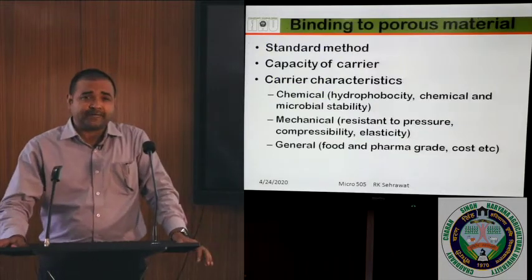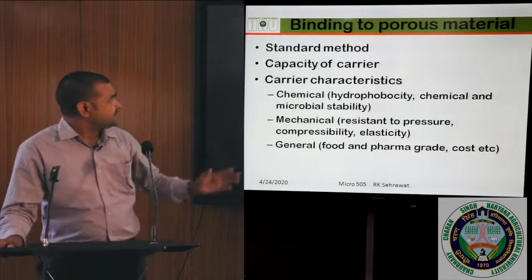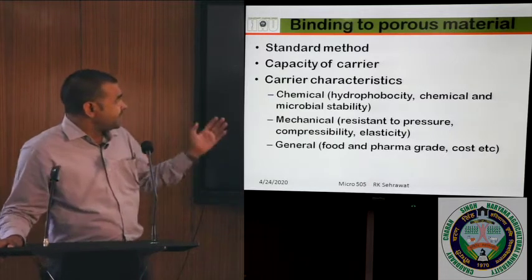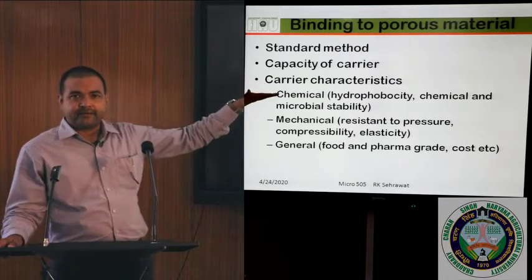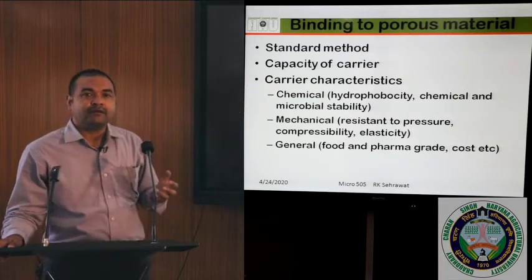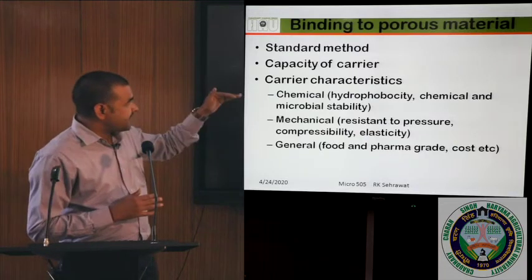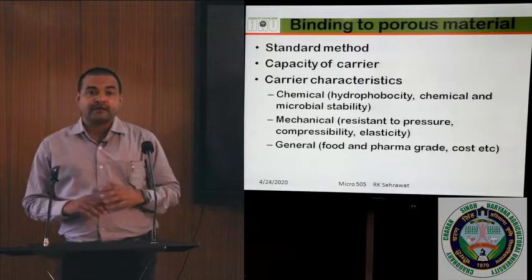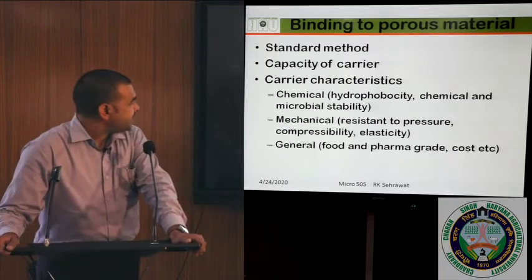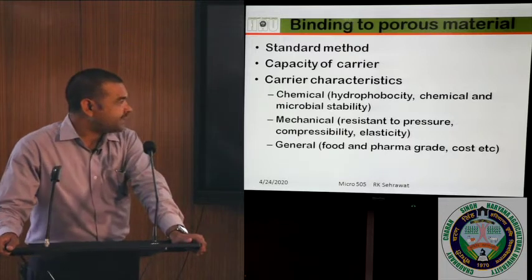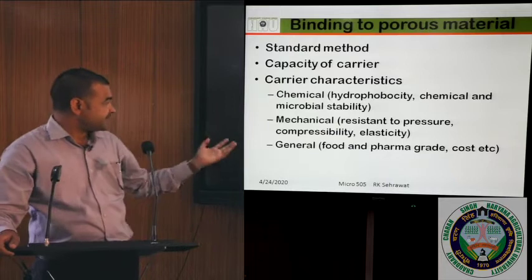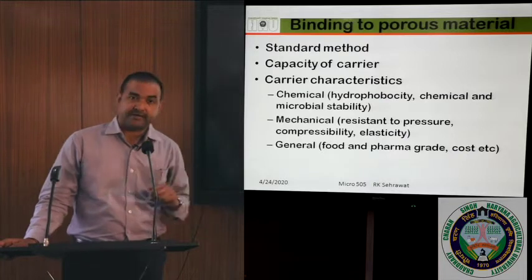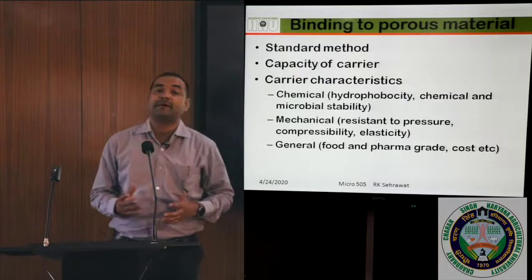Binding to porous material is the most favorable enzyme immobilization and the standard method — standardized in lab conditions and used by industries. It depends on the capacity of the carrier, which is the main parameter. The carrier characteristics to consider are chemical: hydrophobicity, chemical and microbial stability; mechanical: resistance to pressure, elasticity, compressibility; and general: food and pharma grade. It must not produce any toxic compound when any bioprocess is ongoing.